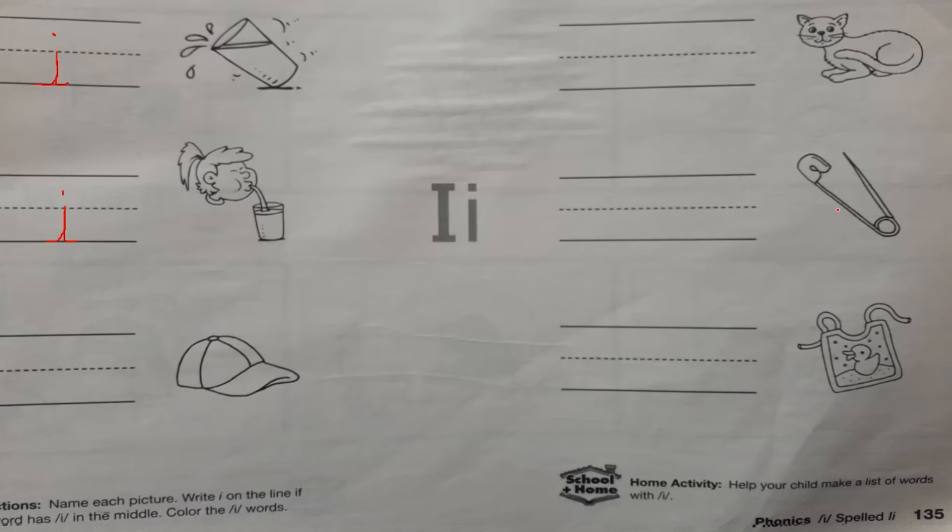Pin. Pin. Do we have I in the middle? Good job. You write I on the line. And in the last picture, bib. Bib. Do we have I in the middle of bib? I. Excellent. We do have I.